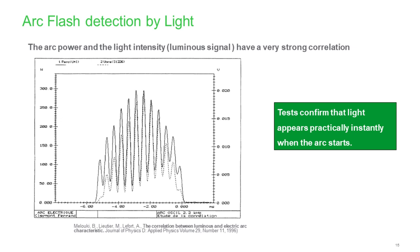Another way to detect the arc is by using light. Testing proves that light appears practically instantly when the arc starts. The solid line shows the energy of the arc and the dotted line shows light intensity — they appear at almost the same time. So light is definitely a faster way to detect arc flash.